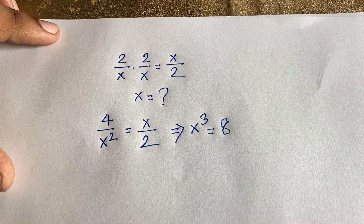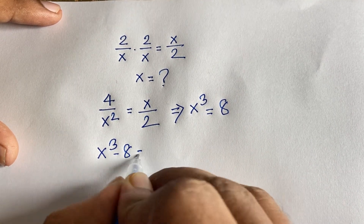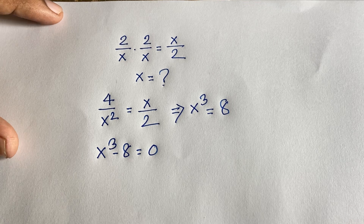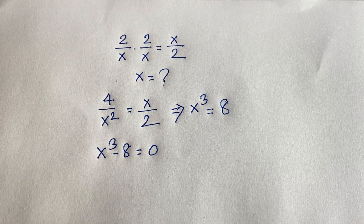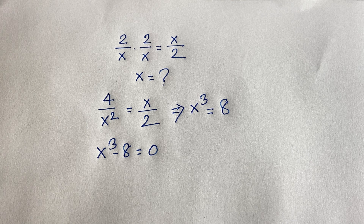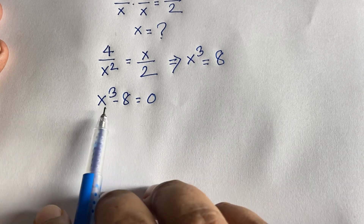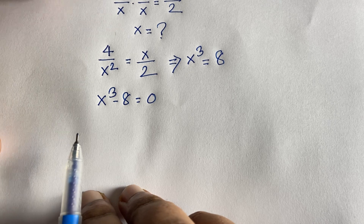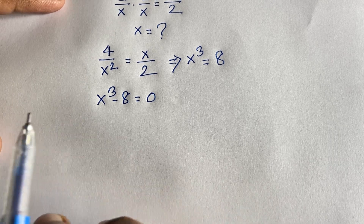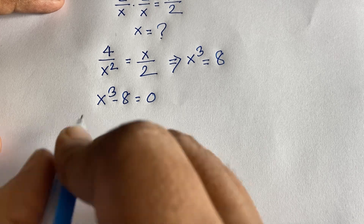So this equation becomes x to the power 3 minus 8 is equal to 0. This is our final equation: x to the power 3 minus 8 is equal to 0. What is the value of x in this equation? We know that there is a cubic root, so we will find 3 solutions — one real solution and two complex solutions.